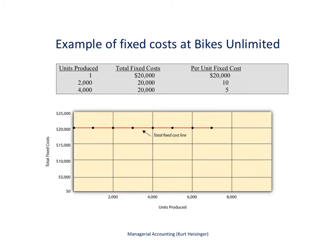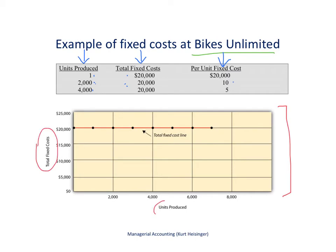Using the Bikes Unlimited example, suppose $20,000 is the monthly lease of the production facility. The total cost of $20,000 stays the same regardless of units produced. If we produce one unit, the per unit cost is $20,000. If we produce 2,000 units, the per unit cost drops to $10 ($20,000 divided by 2,000). As production goes up, the cost per unit goes down. The graph shows total fixed costs remain flat at $20,000.